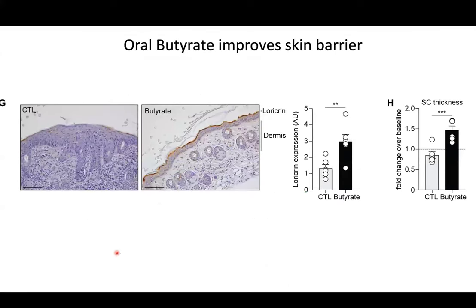Keratinocyte differentiation was increased in mice that had butyrate in their drinking water, and fatty acid biosynthesis was also increased. Taken together, the keratinocyte and fatty acid biosynthesis data indicate a promotion of barrier integrity, and the reduction in inflammation suggests reduced disease development. Quite an interesting side observation: if we don't induce disease and just give butyrate in the drinking water, we could see an increase in the loricrin layer — already a baseline improvement in barrier integrity. So this is not just a consequence of reduced inflammation; even in the absence of inflammation, oral butyrate is improving the skin barrier, which is relevant for susceptibility to disease, not just amelioration of disease.